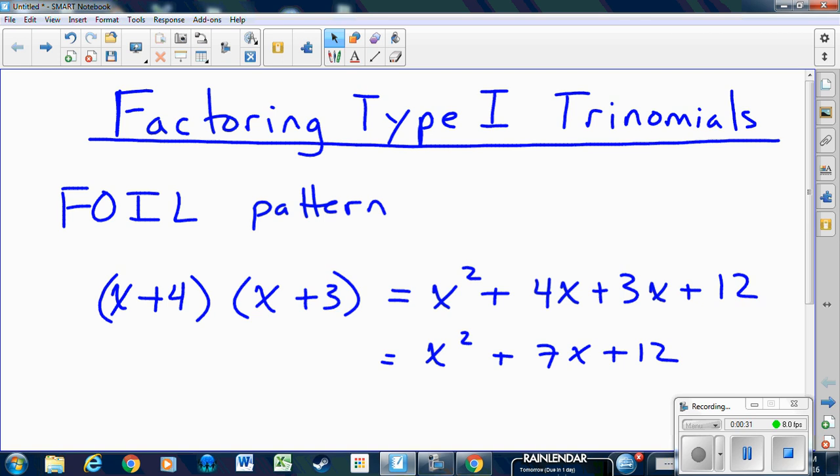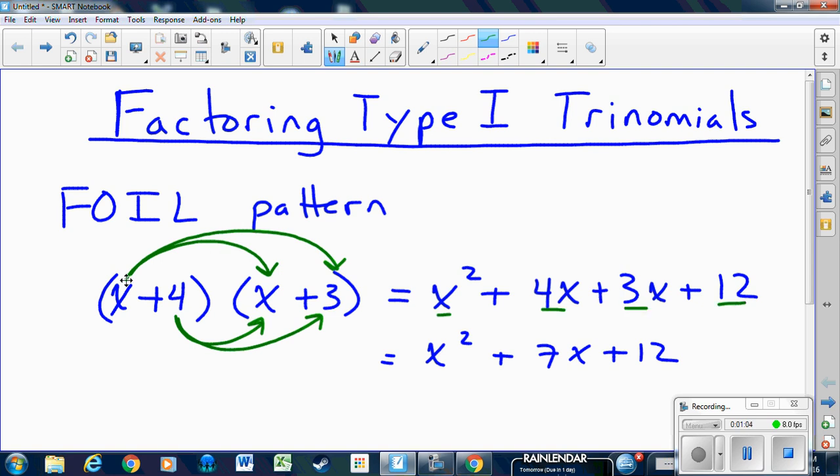Just to make sure everybody understands how FOIL works: In FOIL, which is basically double distributivity, the first term in this bracket multiplies both terms in this bracket, and the second term in this first bracket multiplies both terms in that bracket. The two first things multiply, the two outer things multiply, the two inner things multiply, and the two last things multiply. You end up with four terms in your answer, and the two middle terms combine together to give your middle term in your trinomial.